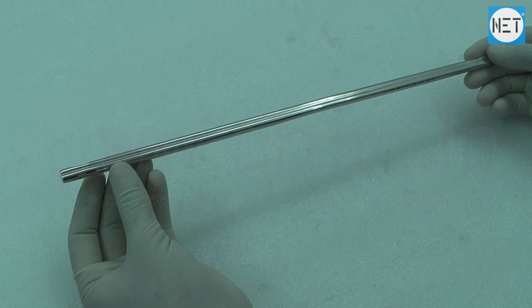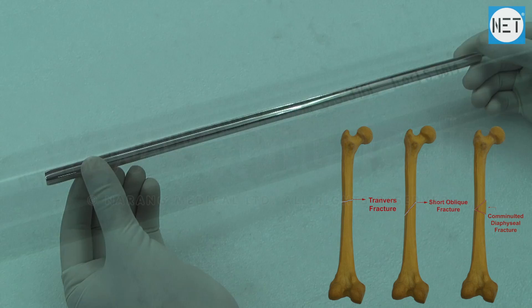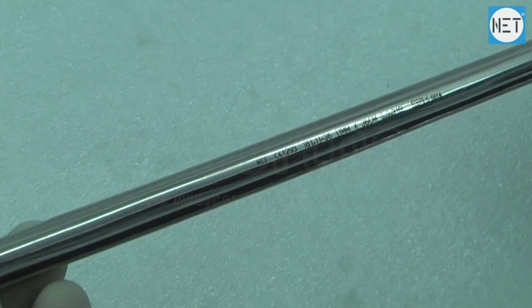Kershner Cloverleaf Nails for Femur Straight. These nails are used to treat simple transverse, short oblique or comminuted diaphyseal fractures of the femur.